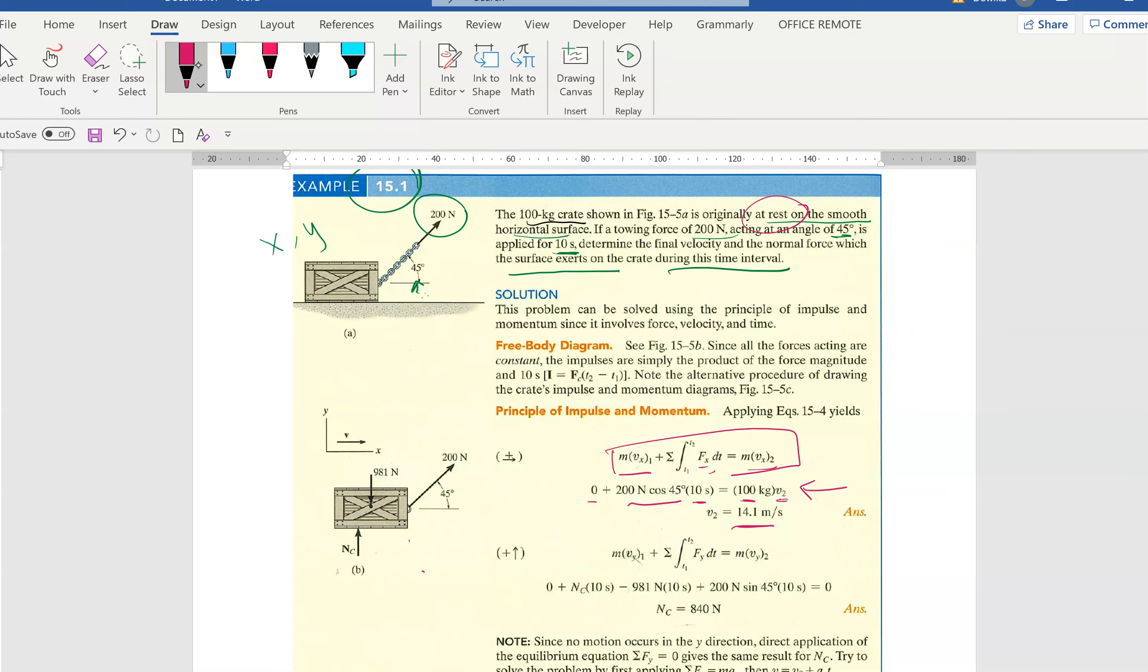Now we use the similar formula but solve for the y-axis. In the y-axis, we have mv1y. There's no movement in the y-axis - look at this, there's no movement in y. So it is zero. But we have forces - we have NC, we have weight. NC times 10, N is force - force times 10. The weight is 100 times 9.81, only then you get force. This formula is force times time. Then we have 200 sin 45 times 10. And there's no movement in the y-axis. Look at this again - there's no movement in y-axis. So we have zero. Can you understand now? We have zero here, so you can solve for the normal force NC.